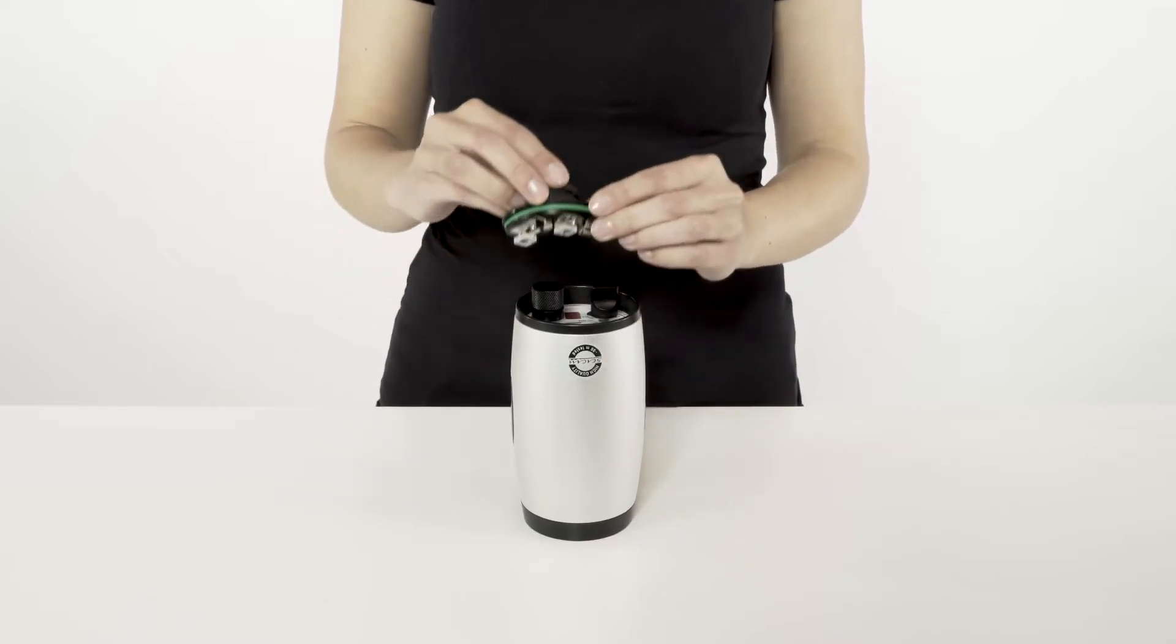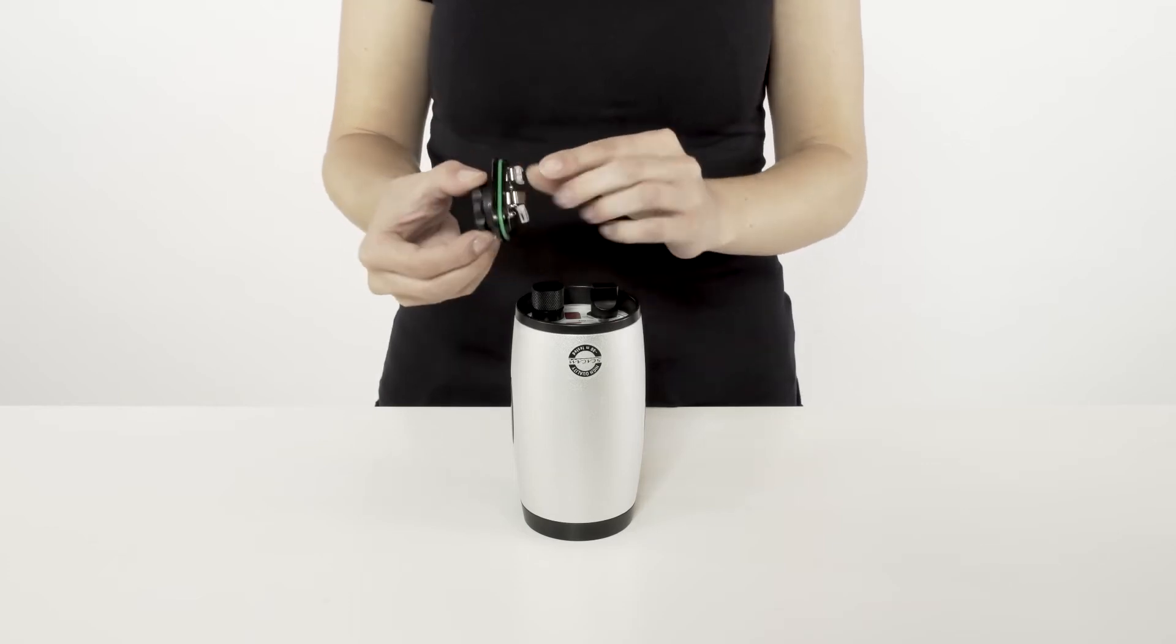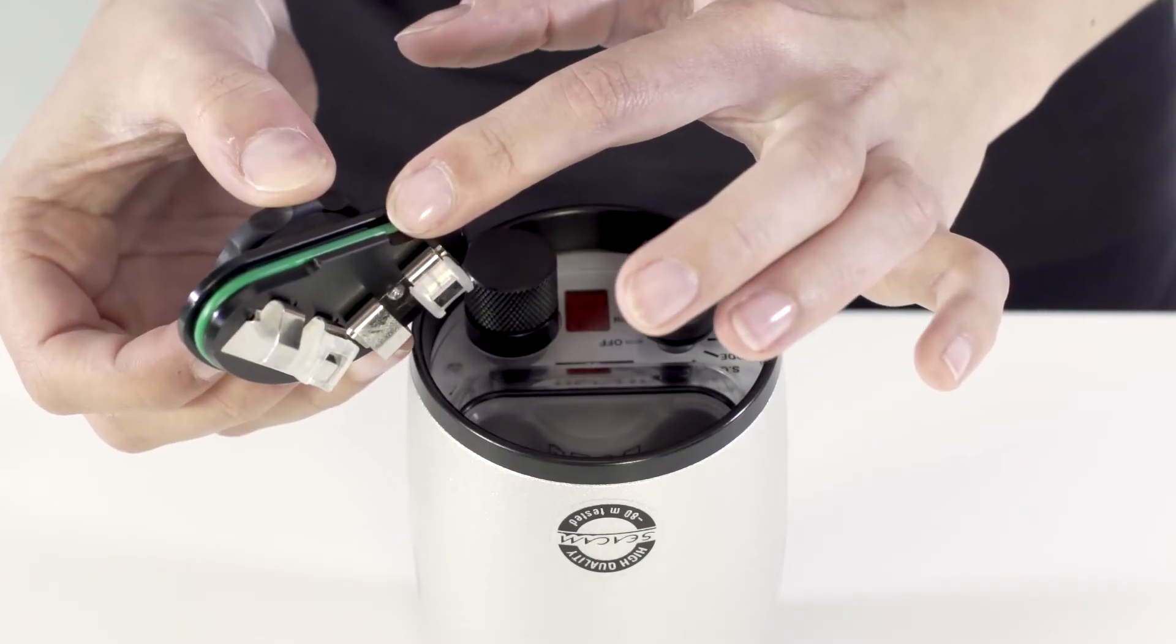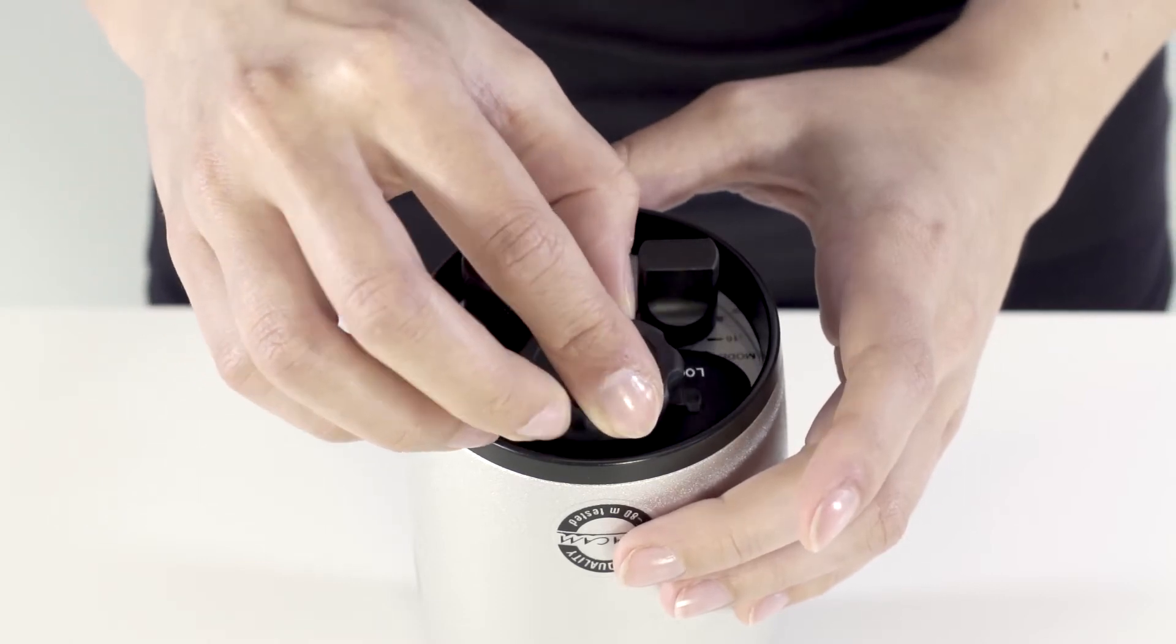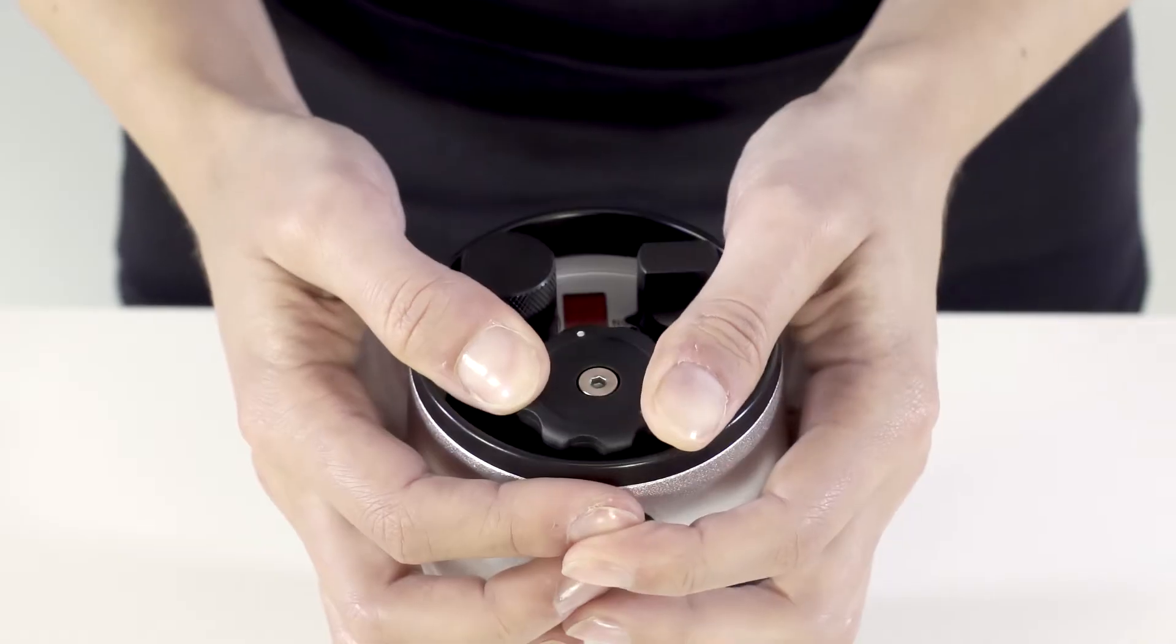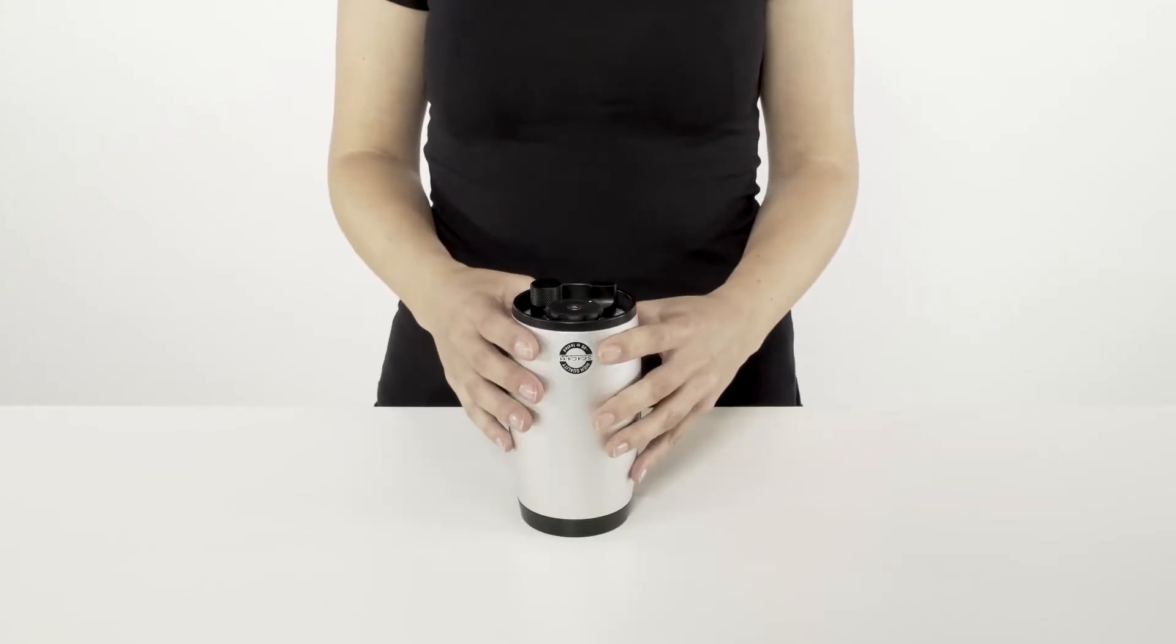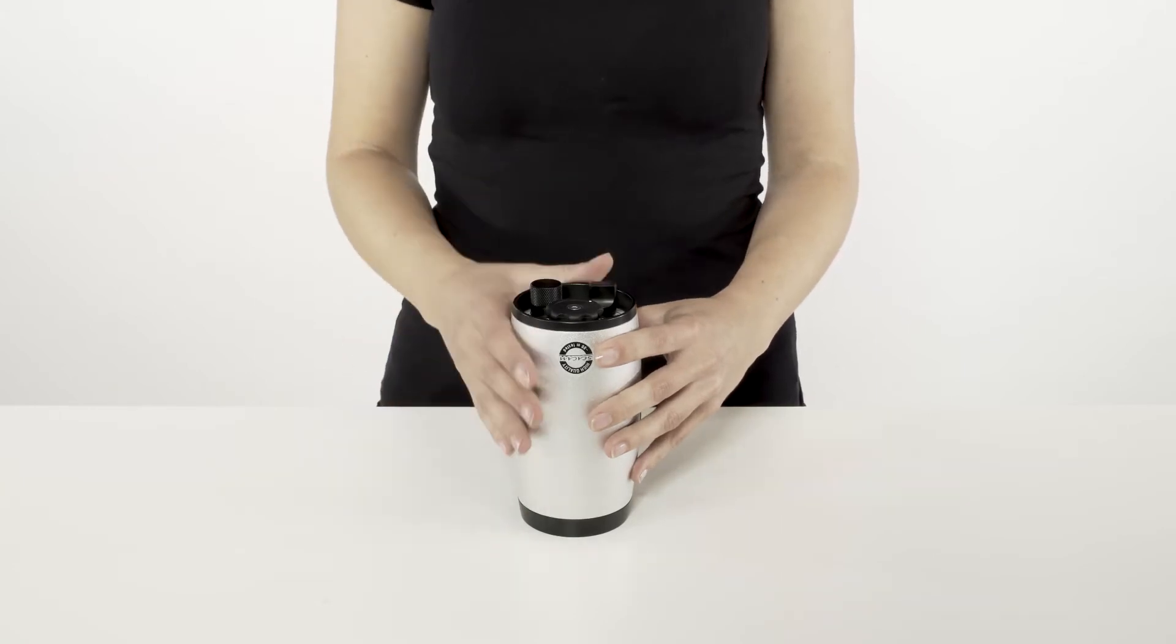To close the container, turn the knob to the open position. Now hook the small latch on the container cap into the back plate. Press it down all the way to the stop, hold the pressure and turn the knob from the open to the lock position. The easiest way to do this is by placing the flash on a hard surface.